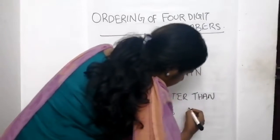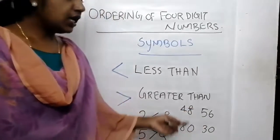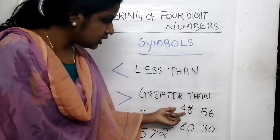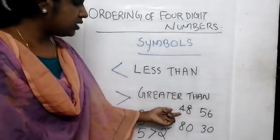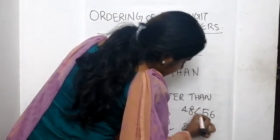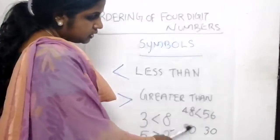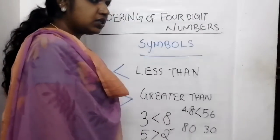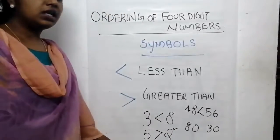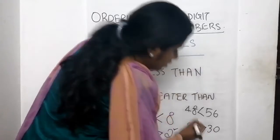Let's take some more numbers. Here we have 48 and 56. In between 48 and 56, which number is smaller? We know 48 is less than 56 - that is 48 is smaller than 56. Then we can write 48 is less than 56 using the less than symbol. Next: 80 and 30. We know 80 is greater than 30, using the greater than symbol.